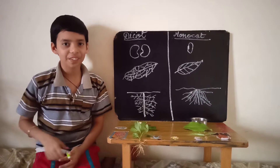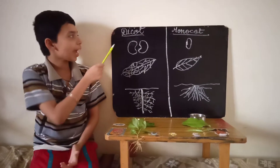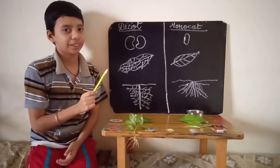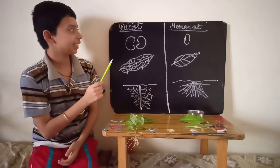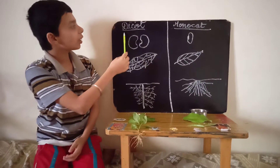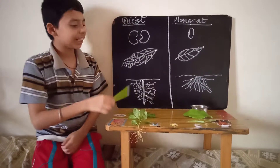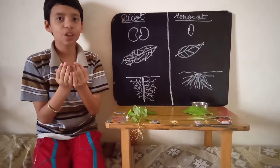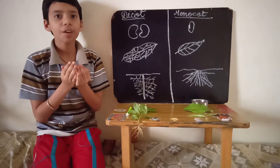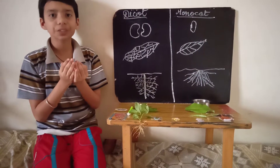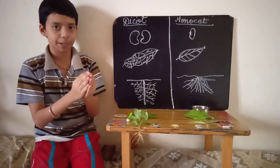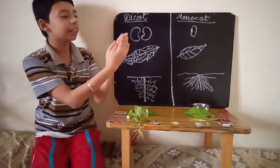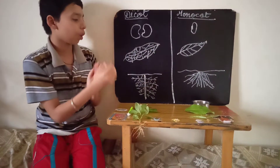Hi everyone, today I am going to explain about dicot and monocotyledon seeds. Dicot seed has two cotyledons. Cotyledon means seed leaves which prepares food for the embryo. It has two cotyledons, which means it will divide into two halves.